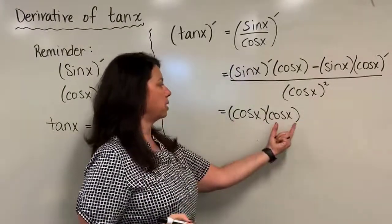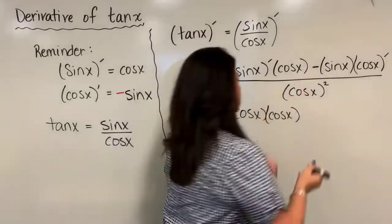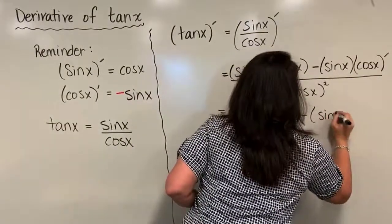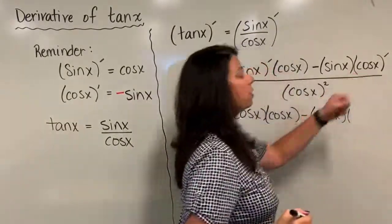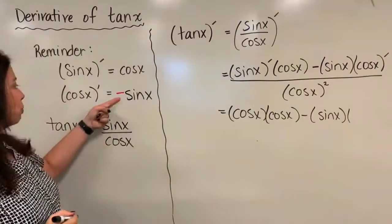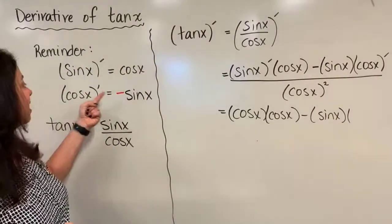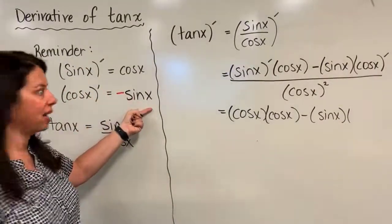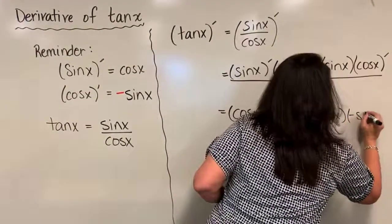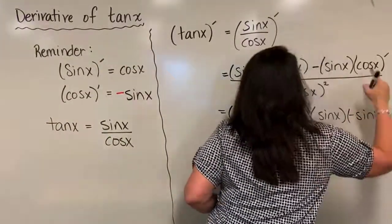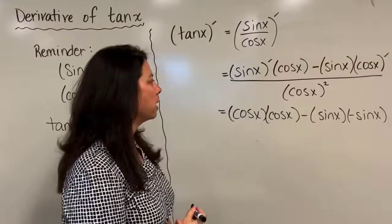Minus sine x times the derivative of cosine x. And just pointing over here derivative of cosine x is in fact negative sine x. So I have a negative sine x that gets put in place of the cosine x's derivative.